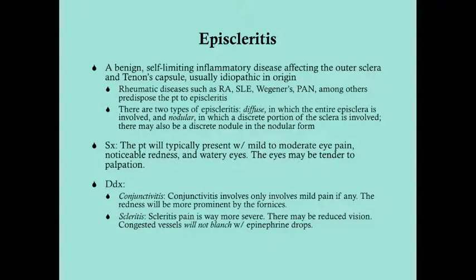Episcleritis is a benign, self-limiting inflammatory disease that affects the outer sclera and Tenon's capsule — the capsule that the globe sits in. It is inflammatory, but usually idiopathic in origin. About 67% of episcleritis cases have no known cause, and it's generally not a bacterial or infectious disease. When a cause is found, it's usually due to rheumatic diseases.